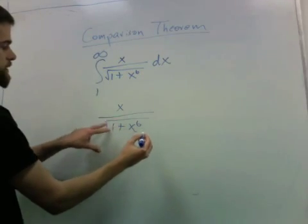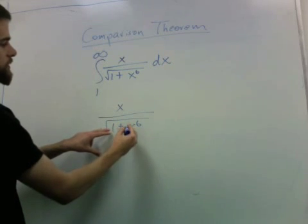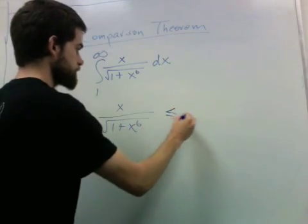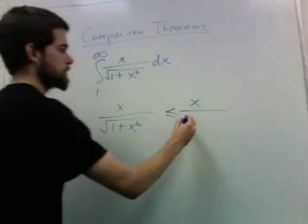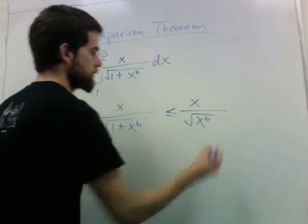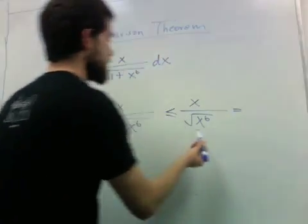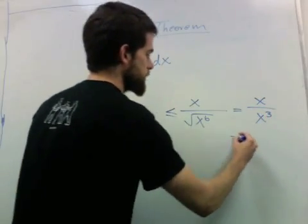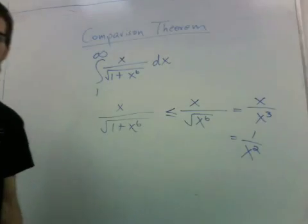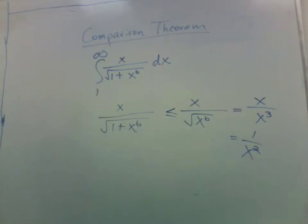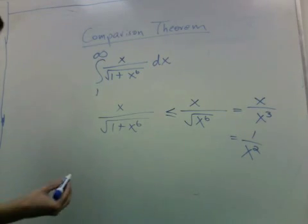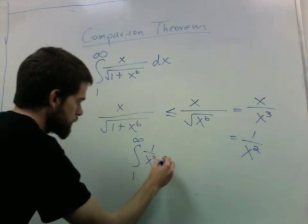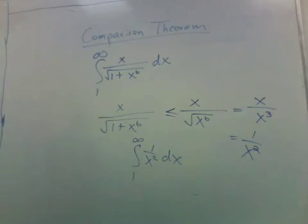So if I replace this with a smaller thing on the bottom, the whole number gets bigger. And this is just x over x cubed, which is just 1 over x squared. And so we have to look at this integral. And this one does converge.